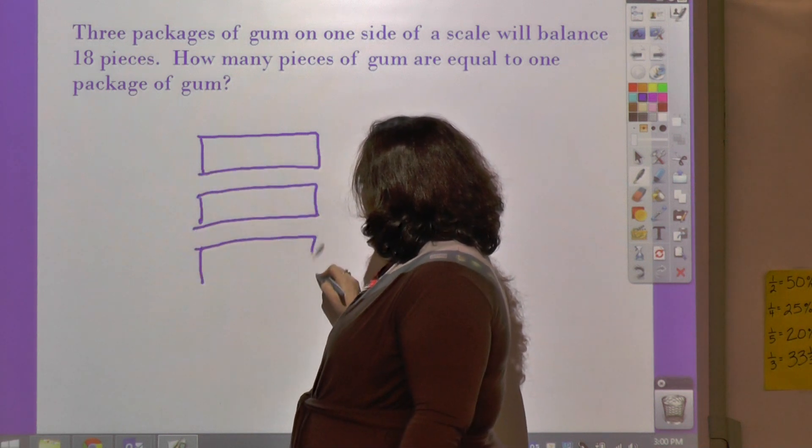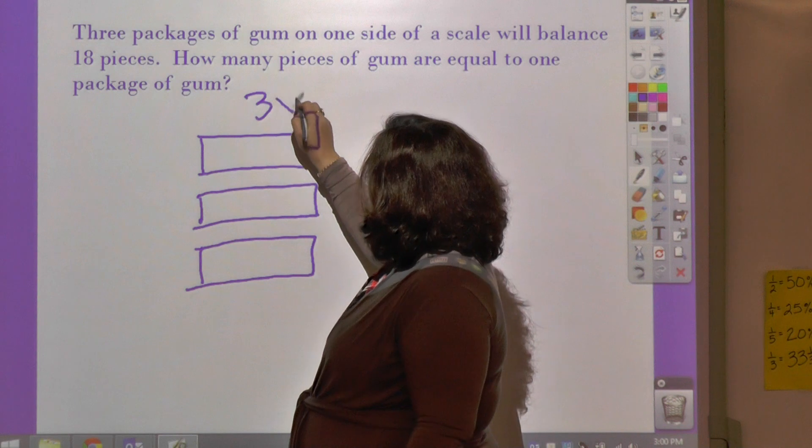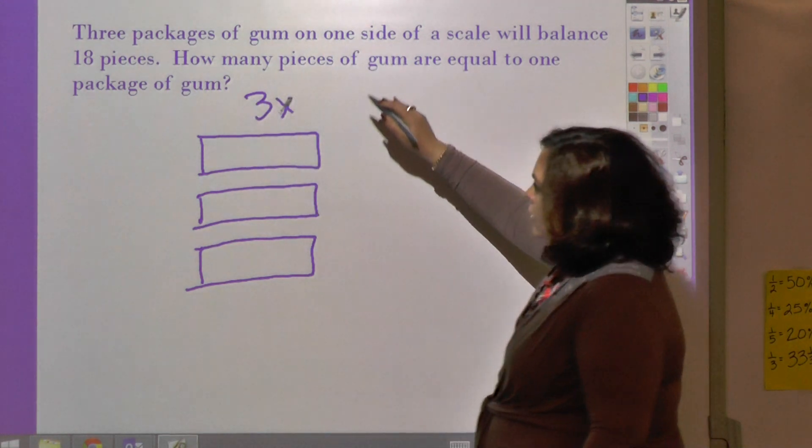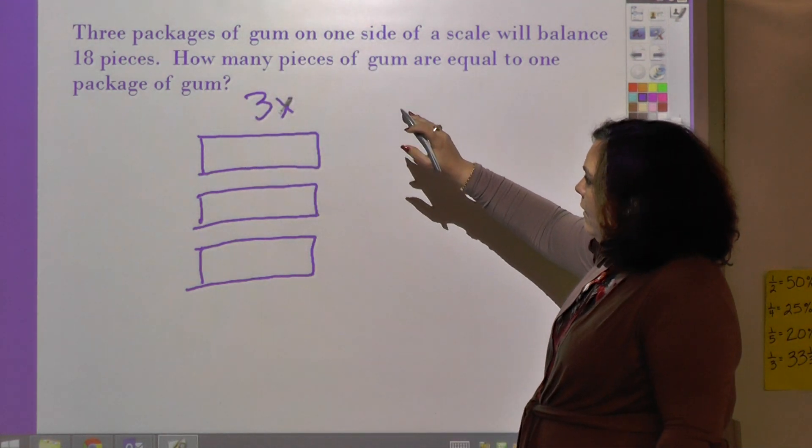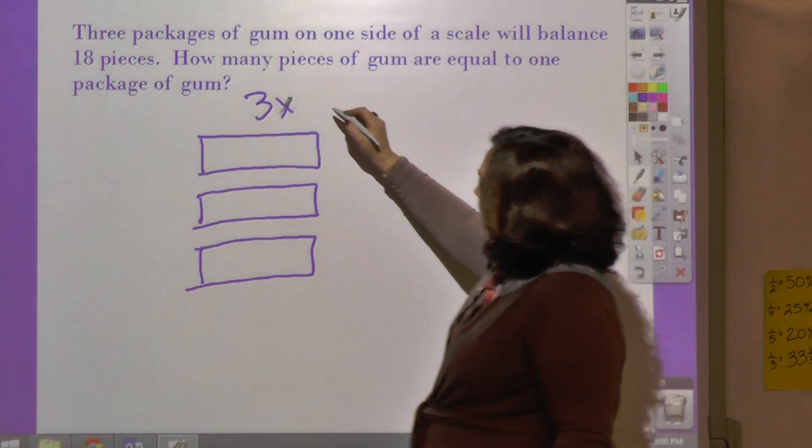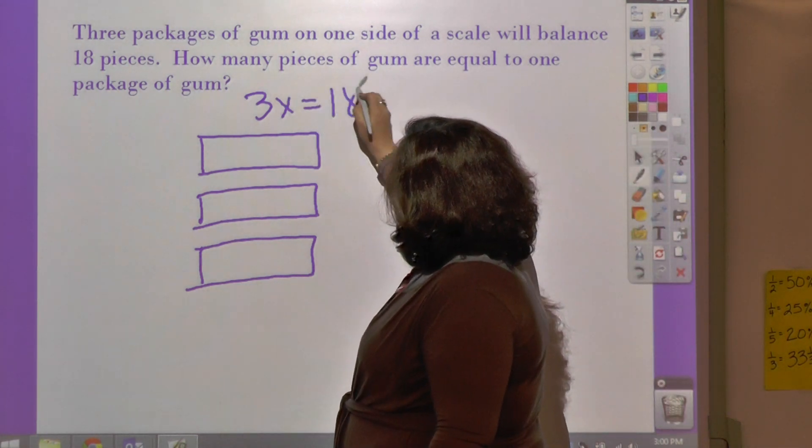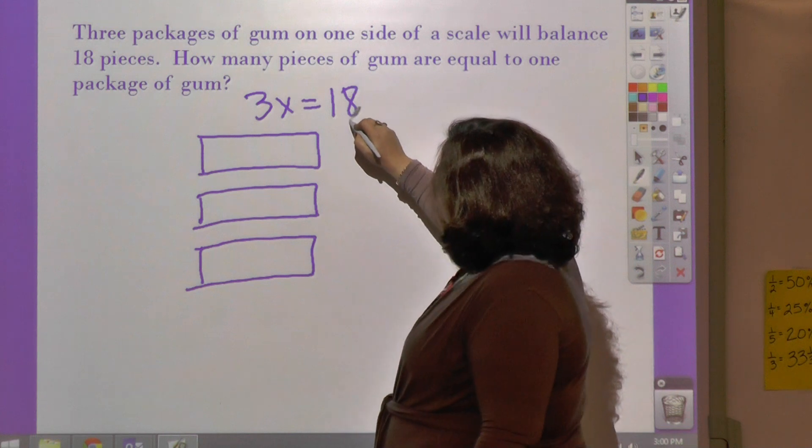So I'm going to do three packages. This is my 3x. And I can just go ahead and write the equation out because it might be easier to model it that way. Three packages will balance 18 pieces, so it's 3x equals 18.